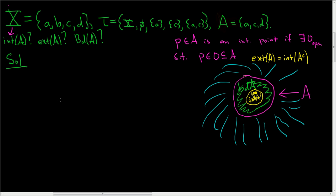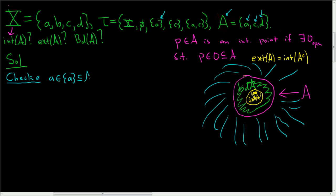Solution. First we have to find the interior of A — all of the interior points of A. We just check every single element of A and see whether or not it's an interior point. Starting with little a: we have to look and see if we have an open set containing little a that's contained in big A. We do — this singleton set containing a is a member of tau, so it's open by definition, and it's contained in A. So little a is in the interior of capital A.